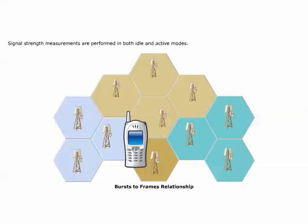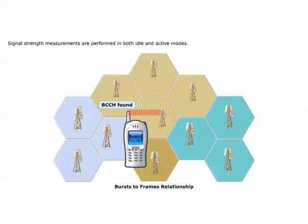The Air Interface TDMA frame structure starts out with the bursts and builds up to the hyperframe. Signal strength measurements are performed in both idle mode and active mode. Idle mode is when the mobile station is turned on and not in a call connected mode, meaning the mobile is not sending signals. When the mobile station is turned on, it measures all radio frequencies in the system and stores the signal strength for each one. The mobile station tunes to the frequency with the strongest signal and determines if it is a BCCH carrier.